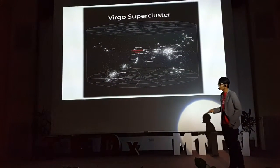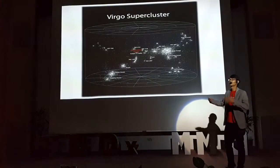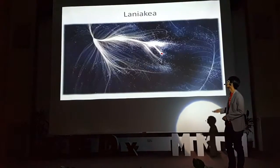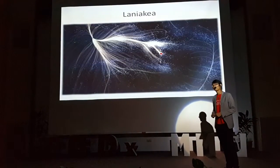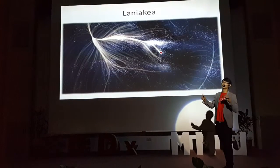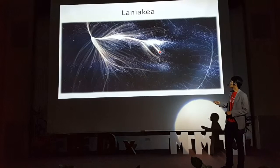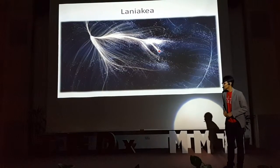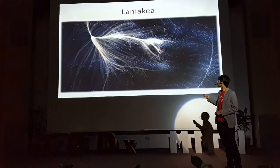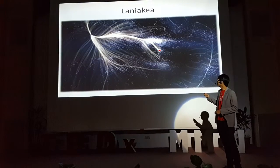The Virgo supercluster itself is just a small part of a much larger supercluster called Laniakea, which in Hawaii means immeasurable heaven. The Virgo cluster is just one of the arms of this massive structure in outer space. And we are right here right now.